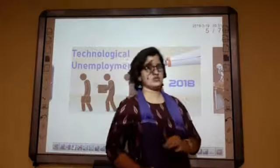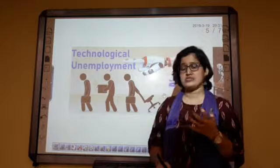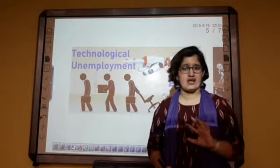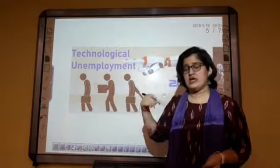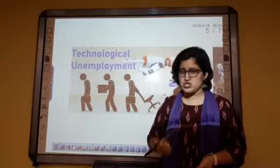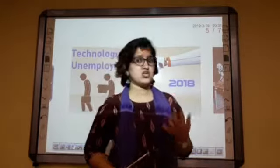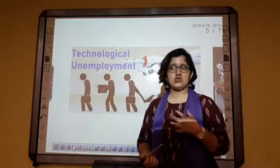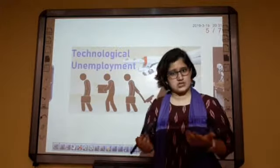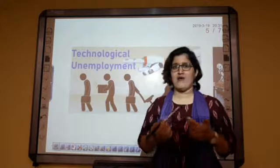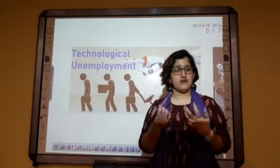Unemployment is a situation where a person does not get a job, and if that person does not get a job, how are they going to earn and run their life and their family's life? Technological unemployment is an unemployment situation created because of new technologies. Whenever new technologies are introduced into the market, they replace many people, and those people become unemployed. When a person cannot earn, the basic necessities will not be afforded by them.